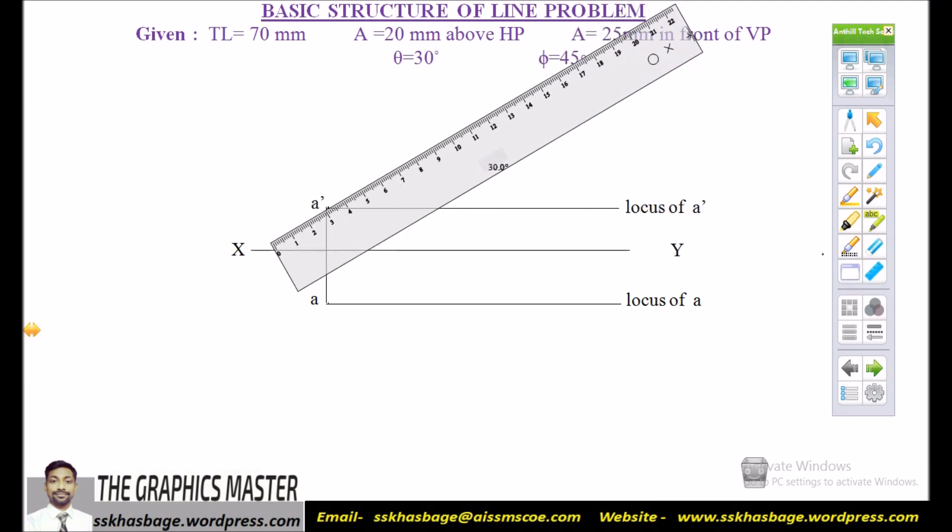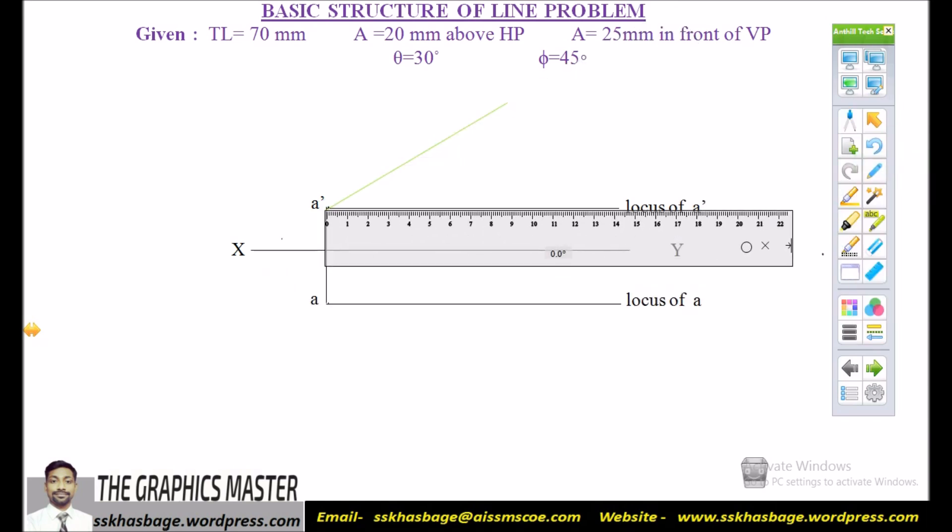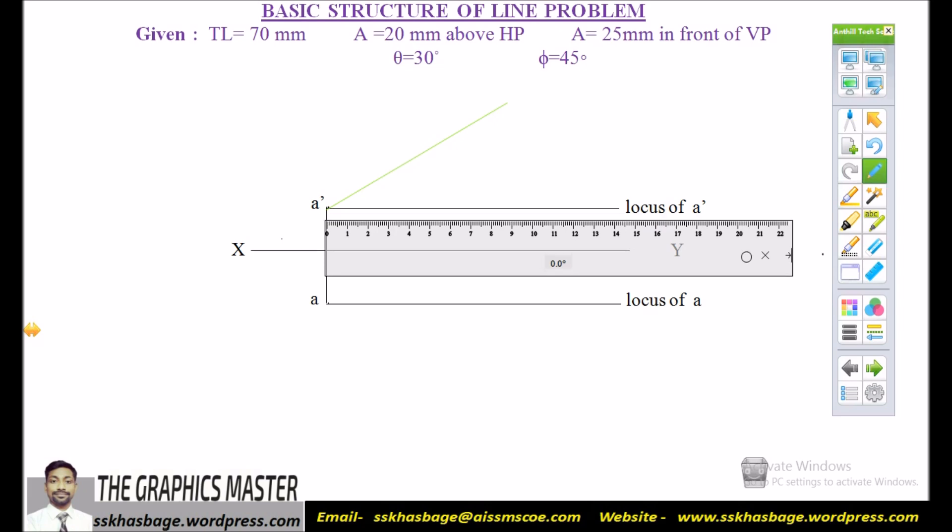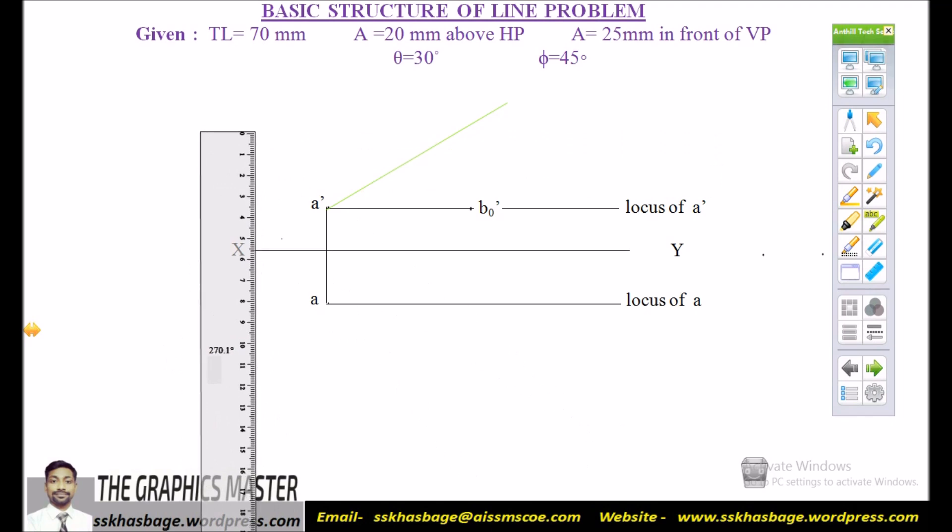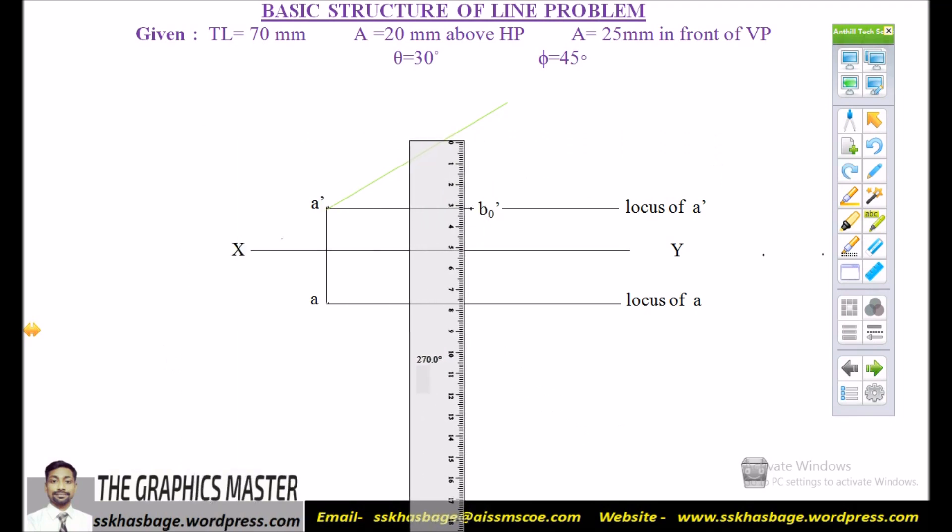As we have given theta equal to 30 degrees, we will take inclined line from the locus of A dash at 30 degrees. Then we will mark the true length in front view as well as in top view that is 70mm and give it name B0 dash and B0.